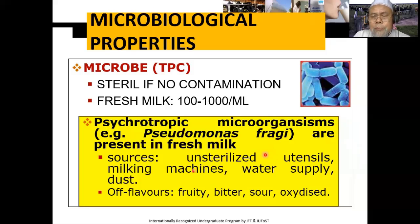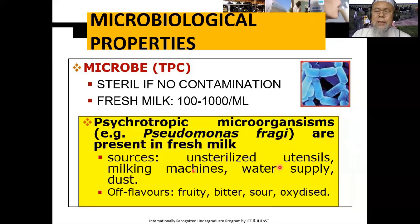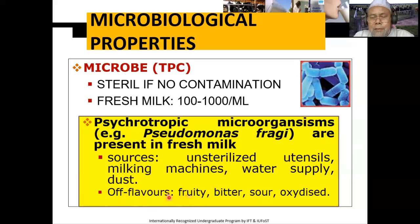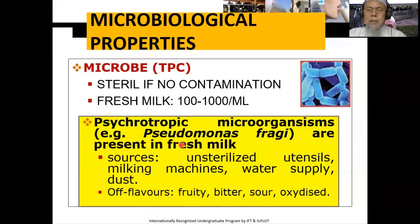Terutama misalnya dari wadah untuk pemerahan, mesin pemerahannya, atau kalau manual dari tangan pemerahannya, dari udara, dari debu, dari kandang dan sekitarnya. Kadang-kadang bakteri-bakteri yang berasal dari luar ini juga bisa menyebabkan perubahan aroma susu, tidak segar lagi. Ada aroma buah, ada aroma pahit, asam, inilah hasil daripada mikroba-mikroba tersebut.